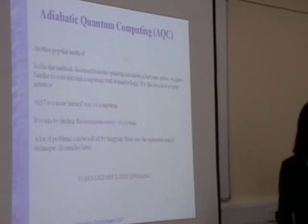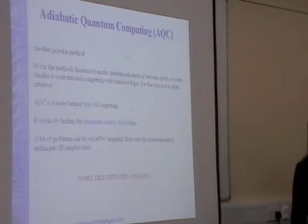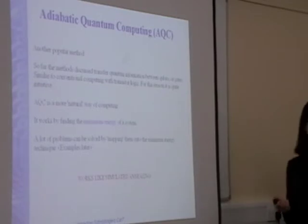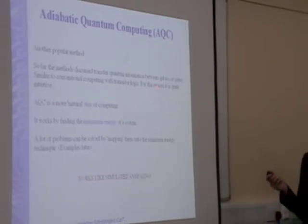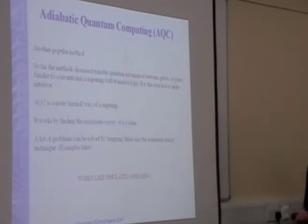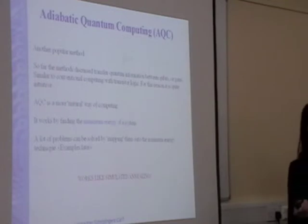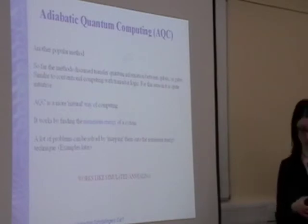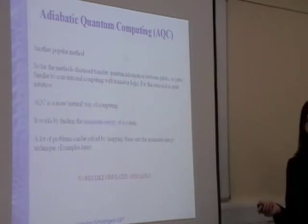The other model I mentioned is the adiabatic quantum computing model, and this is quite popular. It's a much more natural way of actually doing quantum computation. So far, the gate model methods involve transferring quantum information using qubits as gates, similar to conventional computing using transistor logic. AQC is a bit more difficult to understand, but when you grasp it, it's a more natural way of computing. It works by finding the minimum energy of a system, and many problems in everyday life can be mapped onto this idea. If anyone's heard of a technique called simulated annealing in programming, it works very similarly.